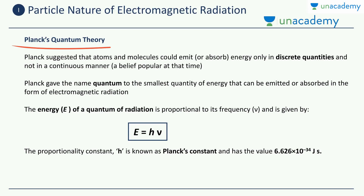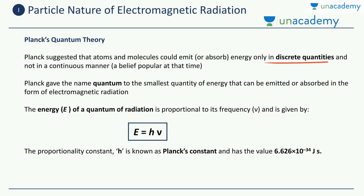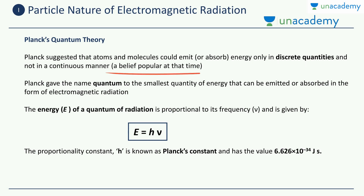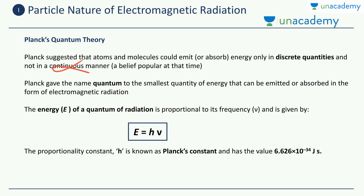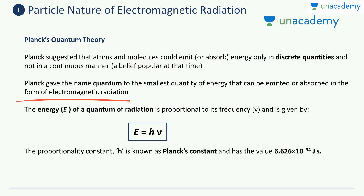Let's start this discussion with Planck's quantum theory. Max Planck was a scientist who carried out a few experiments which led to the development of this theory. He suggested that atoms and molecules could emit or absorb energy only in discrete quantities — not continuous quantities, only discrete quantities. Continuous emission was the fashion well known up till that point, but according to Max Planck, energy could only be absorbed or emitted in discrete quantities. Max Planck gave the name 'quantum' to the smallest quantity of energy that can be emitted or absorbed in the form of electromagnetic radiation.